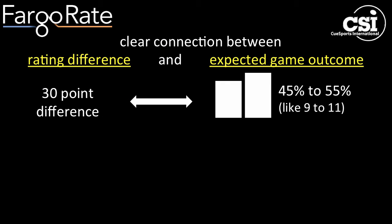Like ELO schemes for chess and other games, Fargo Ratings uses the relative approach. So if two players have the same rating, they're expected to win games at the same rate or with equal likelihood. If they have a 30-point rating difference, as shown here, they're expected to win games in about the ratio shown — like 9 to 11, 45% to 55%. This is like one game on the wire going to 5.